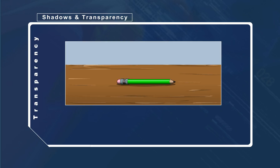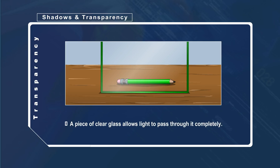Unlike a mirror, a piece of clear glass allows light to pass through it completely. We are able to see through clear glass. We describe this type of material or object as transparent.